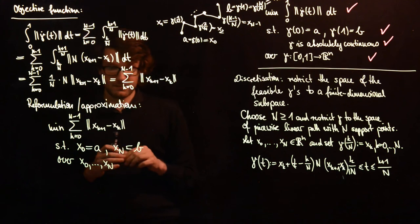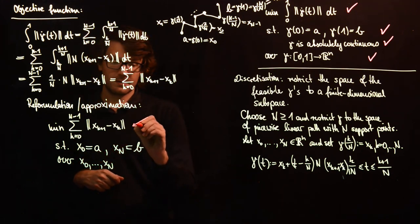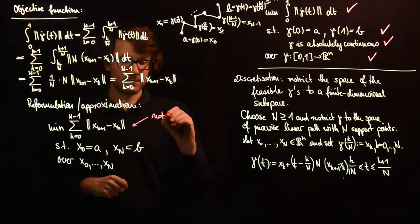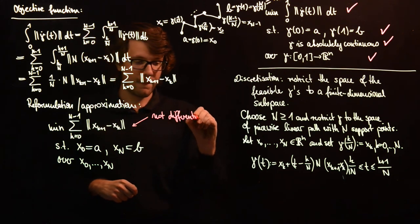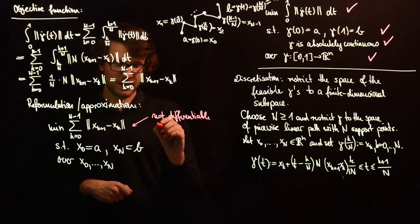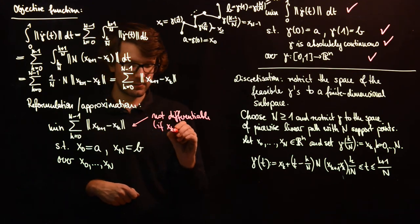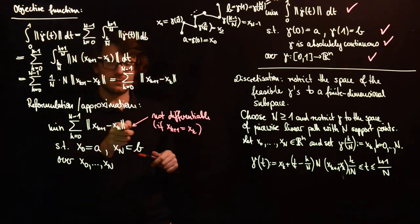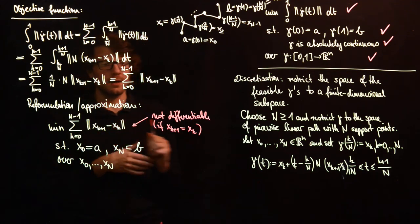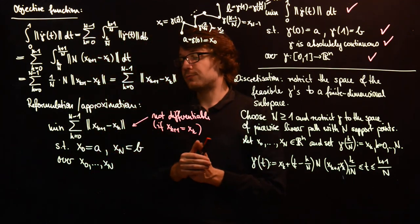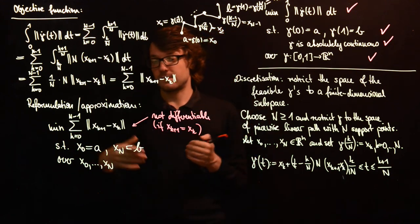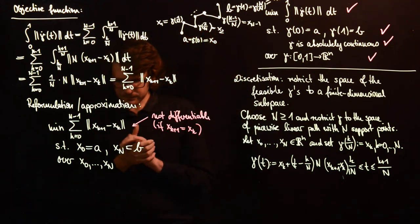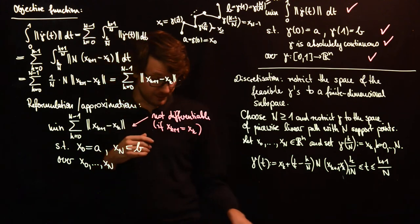Now let's have a closer look. We have said that for the infinite dimensional problem that this norm here is not differentiable, and we have the same problem here. So whenever we have xk plus 1 equal to xk, then this expression here is not differentiable, and so we might run into problems when we solve this naively with the gradient solver, or even worse, with Newton, with the Newton method.